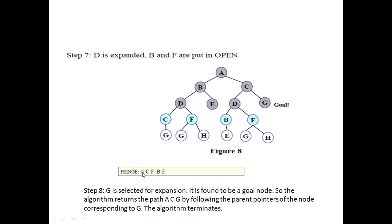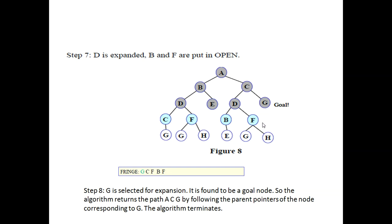Now G is there. We will pick G. But as you can see, G is a goal node. As G is a goal node, your program or algorithm will stop because it has found whatever it needs to find. The algorithm returns the path, which is A, C, and G. It will follow the parent pointers of the node corresponding to G and then the algorithm will terminate.